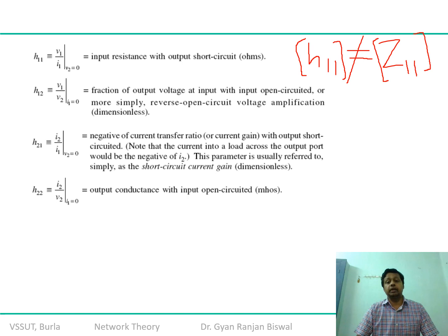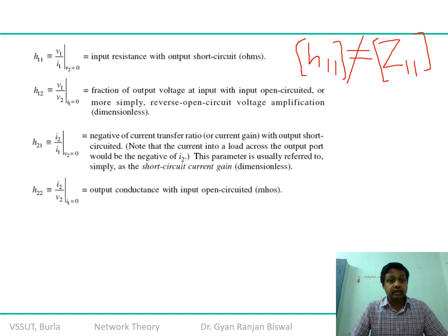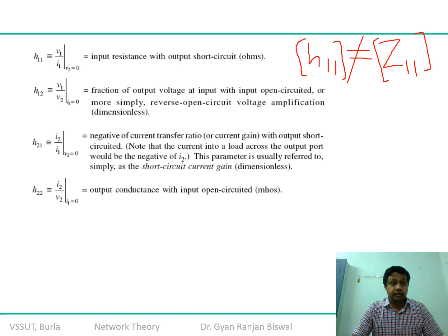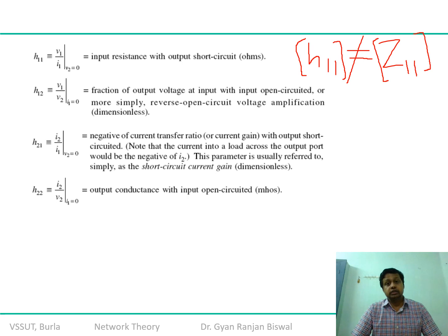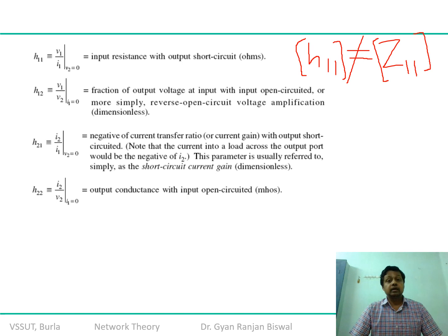The output characteristic gives I2 = H21·I1 + H22·V2. By keeping V2 = 0, we calculate H21 = I2/I1. Both are current quantities, so H21 is dimensionless. Since V2 = 0 represents short-circuit conditions, H21 is called the short-circuit forward current gain — the amount of current transferred in the forward direction.